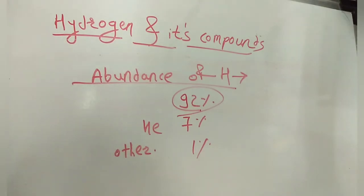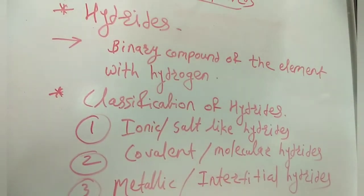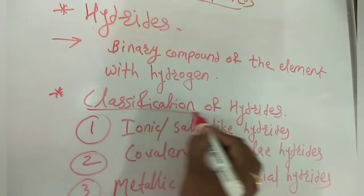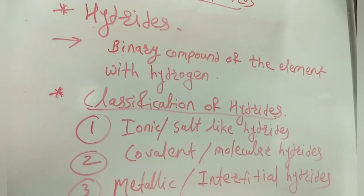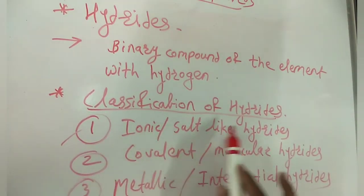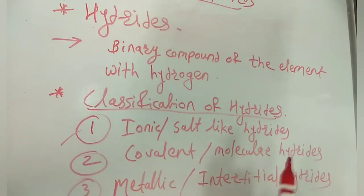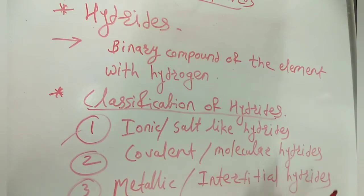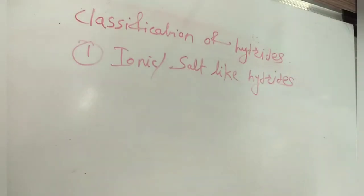Now let us begin with hydrides. Hydrides are the binary compounds of elements with hydrogen atoms. There are three classes of hydrides, classified based on the electronegativity of the element and the type of bond formed: first, ionic or salt-like hydrides; second, covalent or molecular hydrides; and third, metallic or interstitial hydrides.